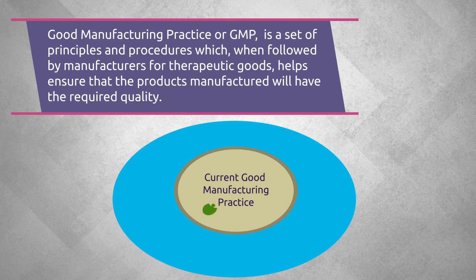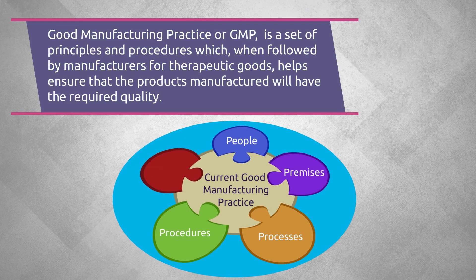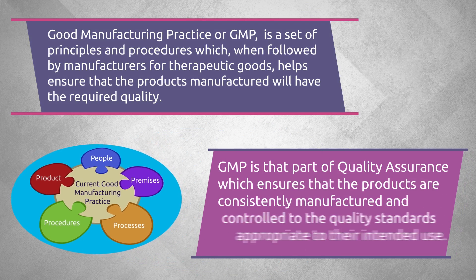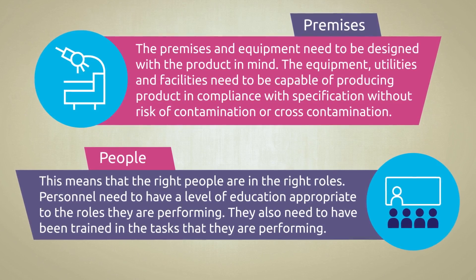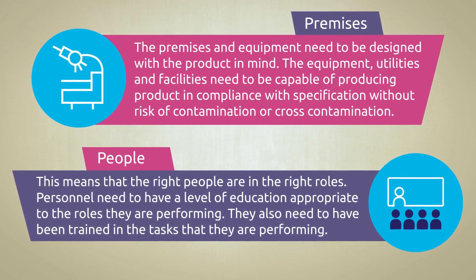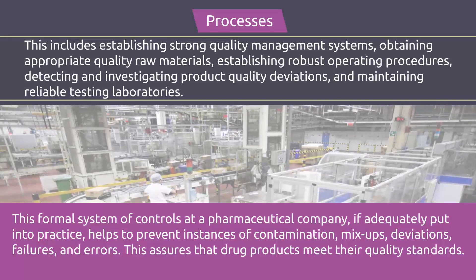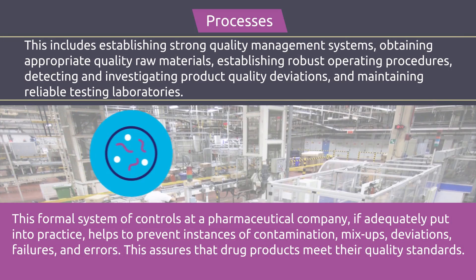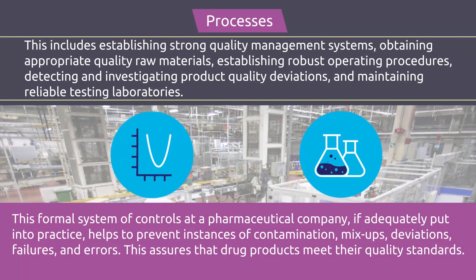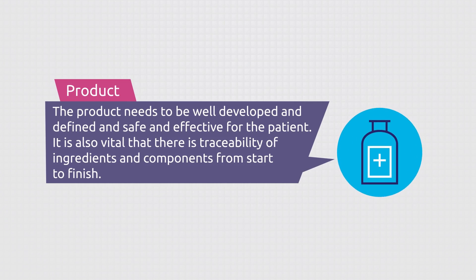Next you'll learn about Good Manufacturing Practice or GMP. GMP is a set of principles and procedures which, when followed by manufacturers, help to ensure that the products will have the required quality. This includes the people working in the plant and the design and management of the premises, equipment and utilities. The processes we use are well defined and controlled, while the procedures in place clearly document how each task is to be performed. The product itself needs to be traceable from start to finish.